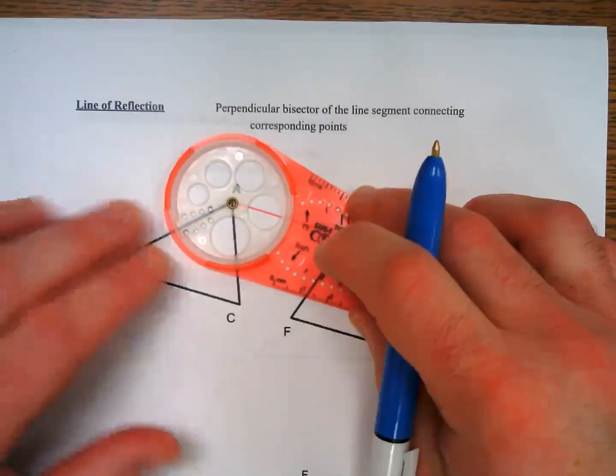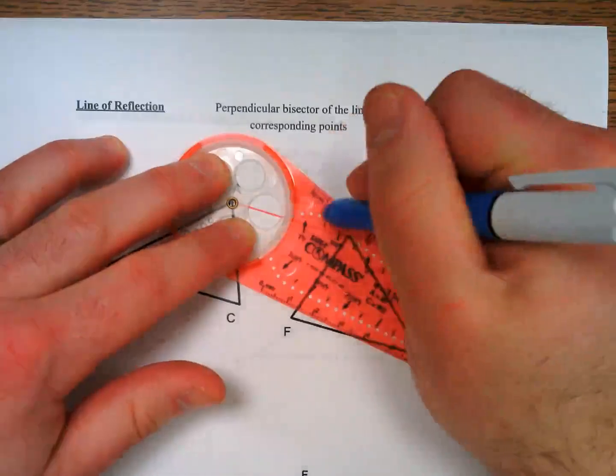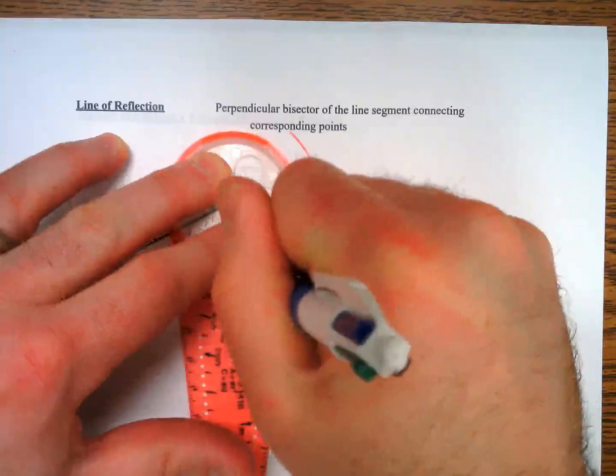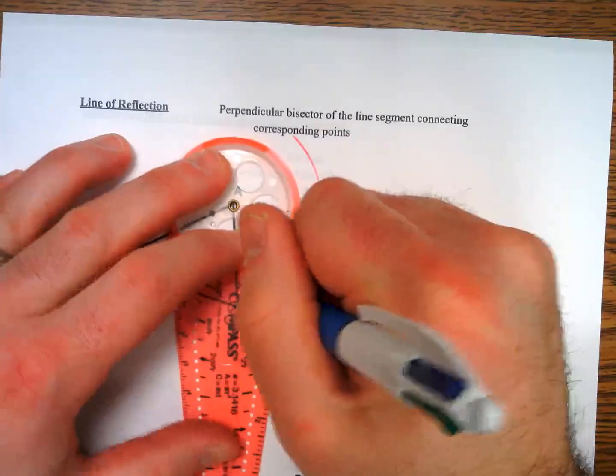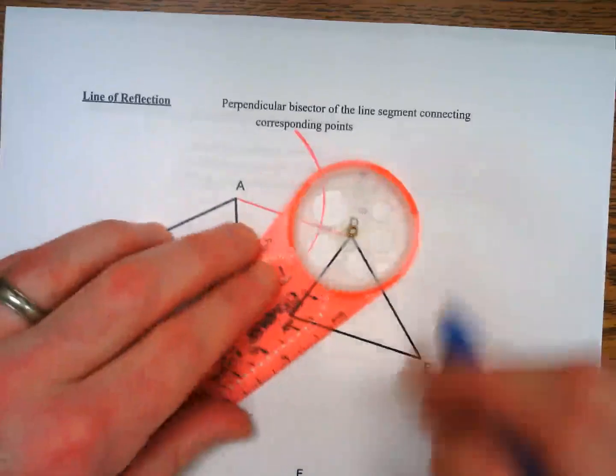As a reminder, you center the compass on one of the endpoints, choose a hole that's more than halfway—I'm going to choose the fourth one—arc on top, arc on the bottom. Whoops, I slid around a little. Same hole but centered at the opposite point, one two three four, arc at the bottom, arc at the top.